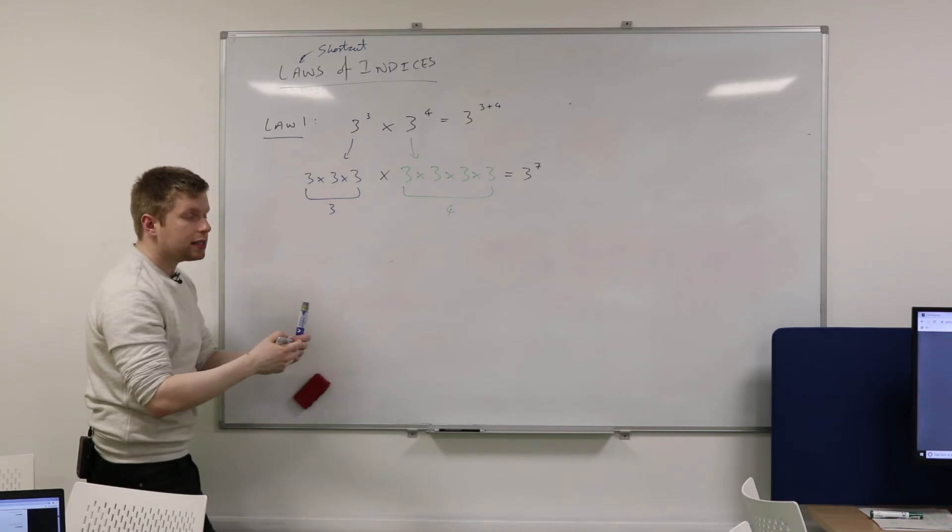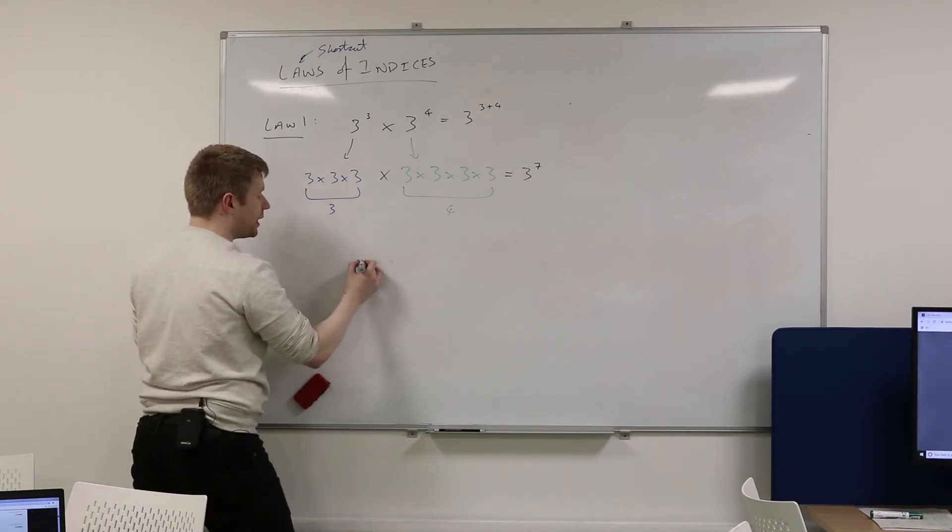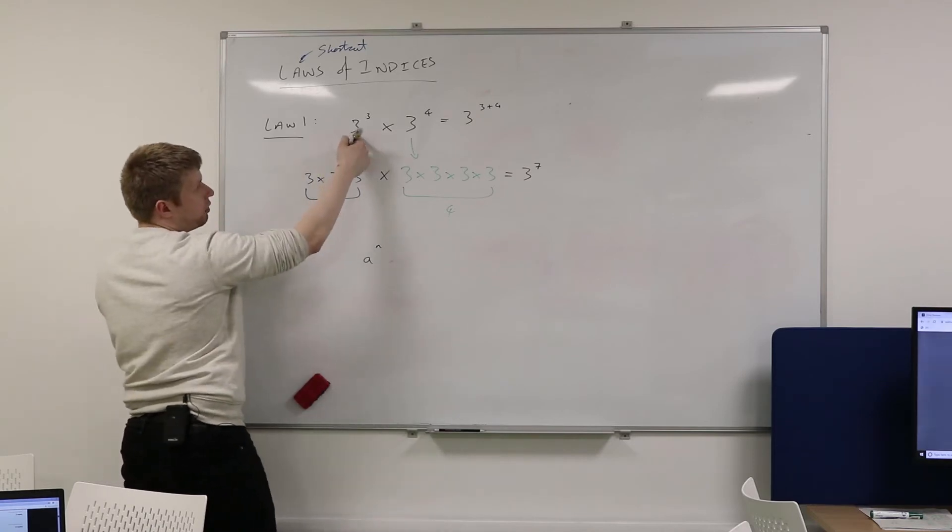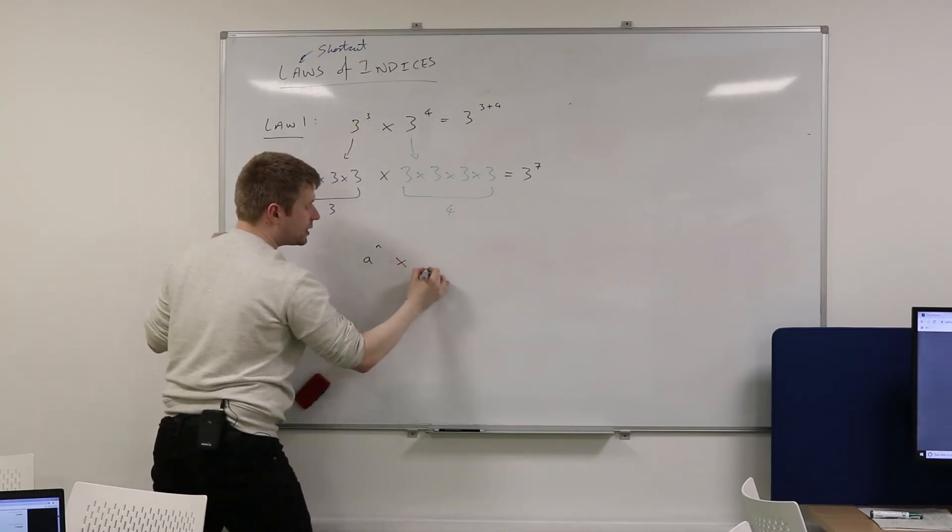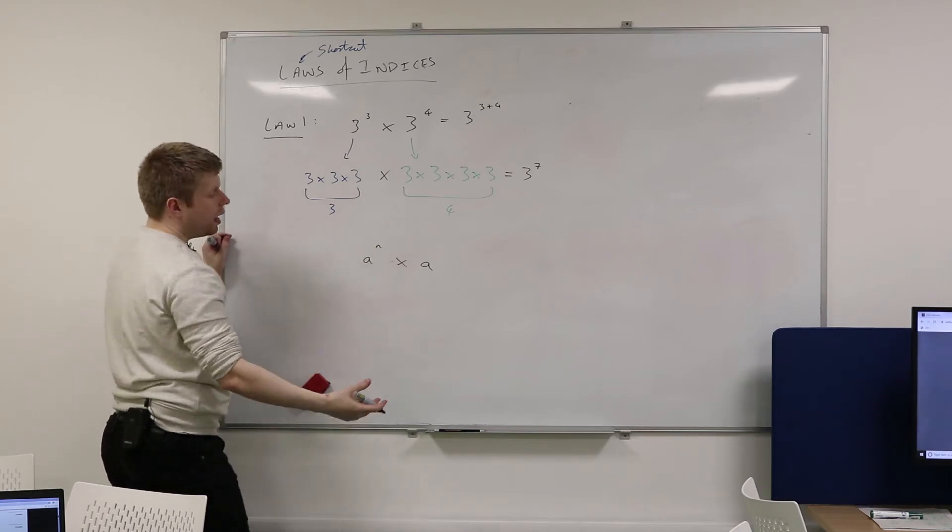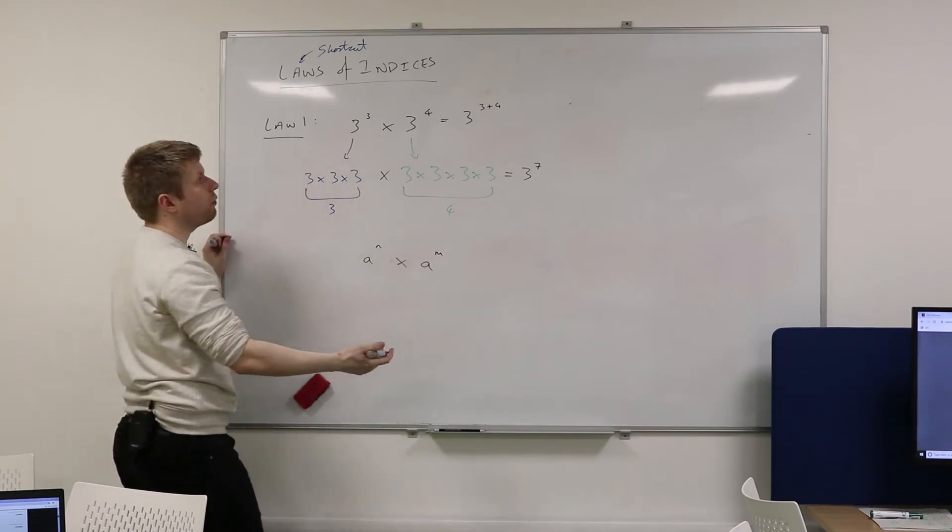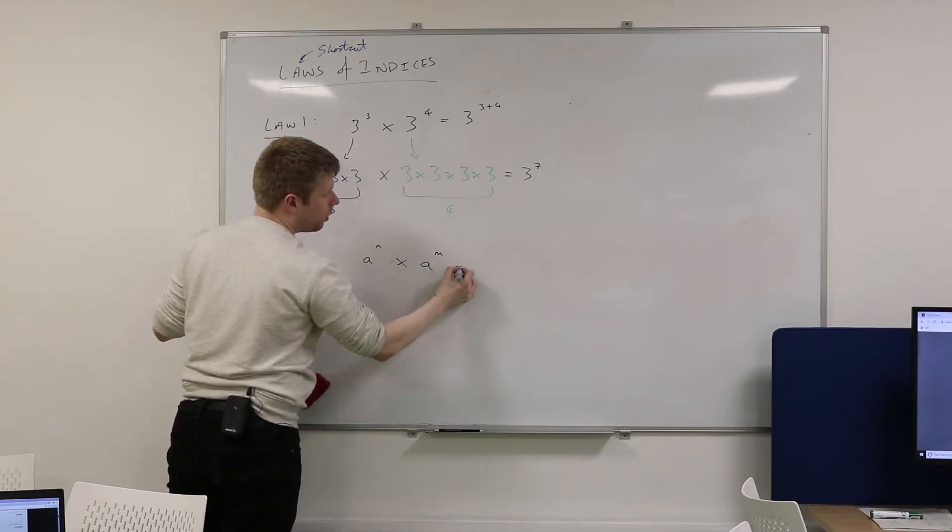So if I was going to generalise this, if I take some base, let's call it A, and I raise it to the power of n. That's a bit like saying 3 to the power of 3. And then if I take the same base, A, and I raise it to a different power, let's say m, it could be the same, but let's say it's different. What would this be equal to?